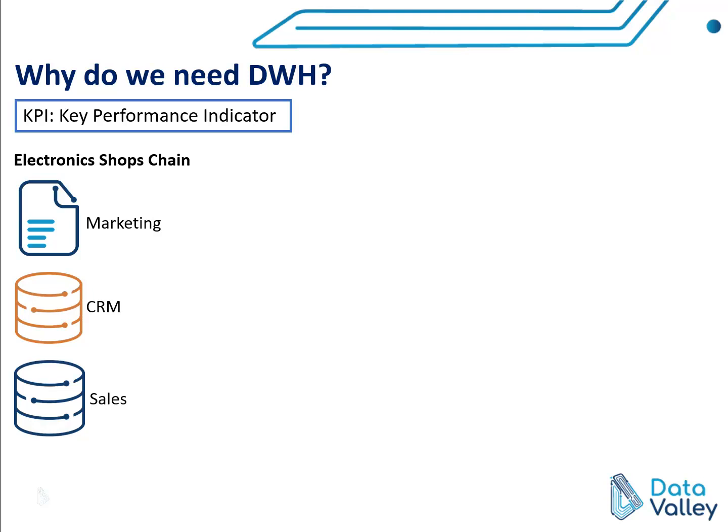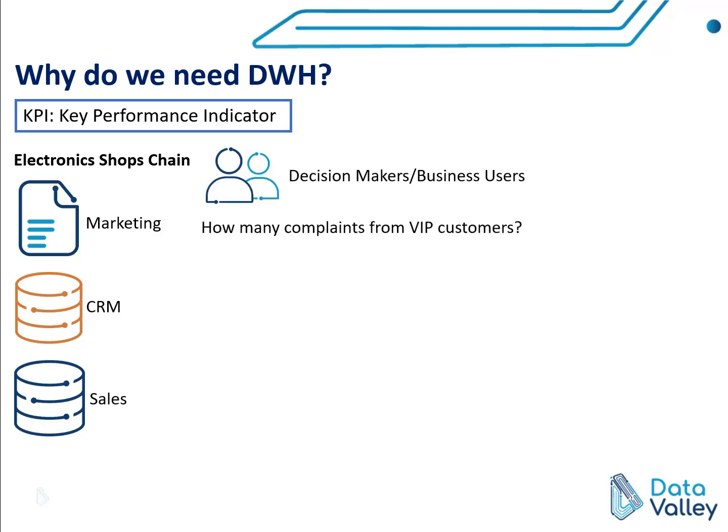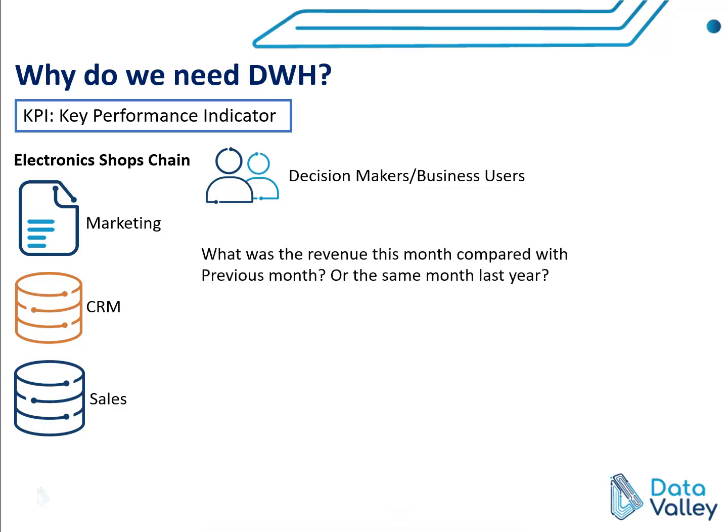Now let's play the role of a decision maker or a business owner. What kind of KPIs would we like to see? For example, we can ask: how many complaints are from VIP customers? To answer this question, we need to integrate information from different systems — like a complaint system and a CRM system to classify VIP versus non-VIP customers. We can also ask: what was the revenue this month compared to previous months or the same month last year? This question gives us a KPI in the performance category.